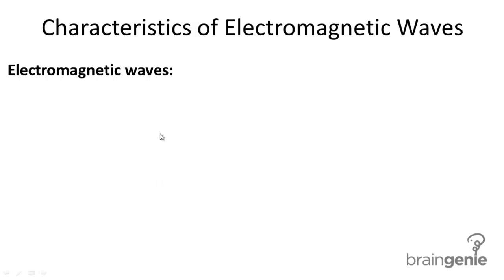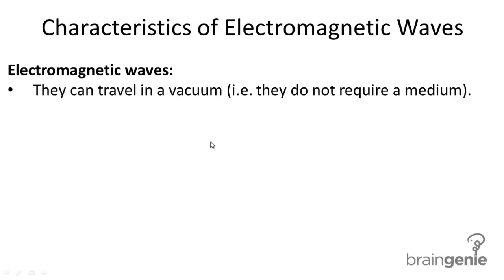Characteristics of electromagnetic waves. The first characteristic of electromagnetic waves is that they can travel in a vacuum. That means they do not require a medium to travel in; they can travel in empty space.